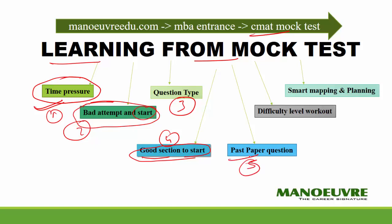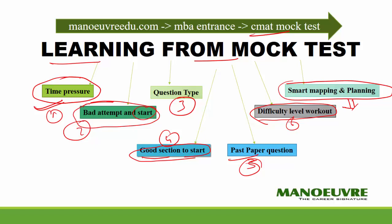Fifth, the first 5 mock tests are based on the last 5 years' question papers, giving you direct past year paper practice. Sixth is the difficulty level — you will work on the difficulty level of questions you'll face in CMAT, and practice the same question types in the mock test. Last but not least, seventh is smart mapping and planning.